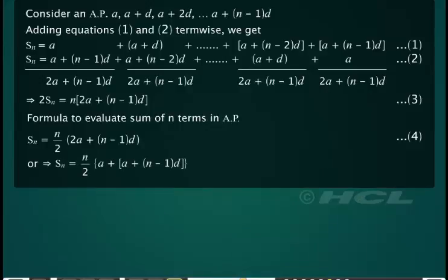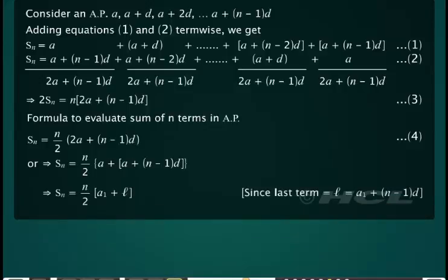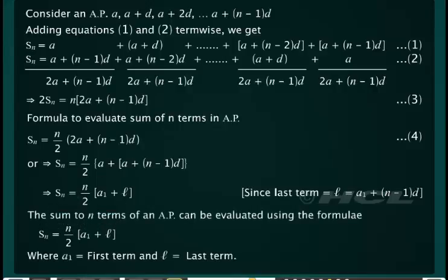Observe that in the formula, the terms within the square brackets can be split as the sum of the first term and the last term as shown. Therefore, the sum to n terms of an AP can also be expressed with reference only to the first term and the last term. Hence, the sum to n terms of an AP can be evaluated using the formulae as shown.